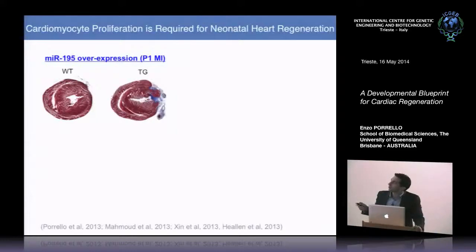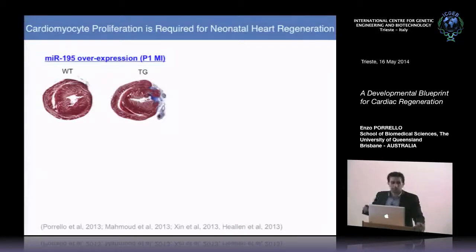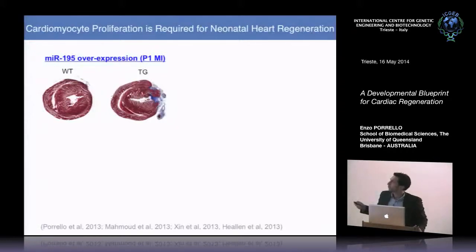We found that if you overexpress microRNA miR-195 in cardiomyocytes and subject one-day-old mice to myocardial infarction, in contrast to wild-type mice which regenerate, the transgenic mice with less cardiomyocyte proliferation also show increased scar tissue and less regeneration.